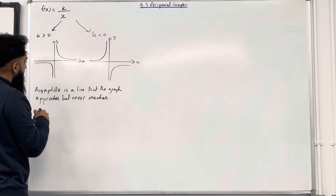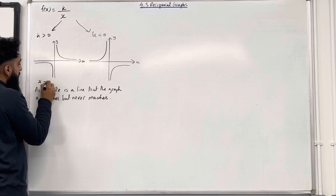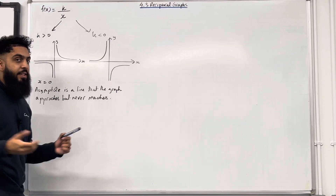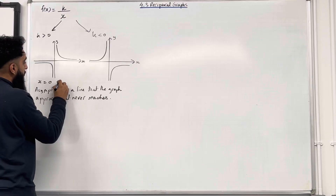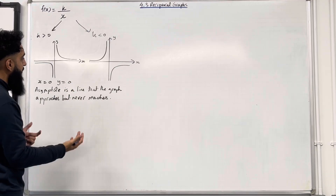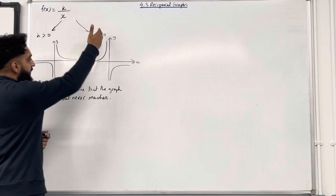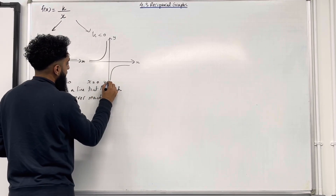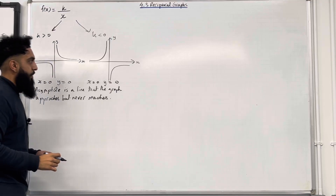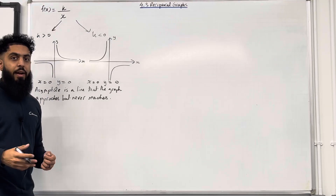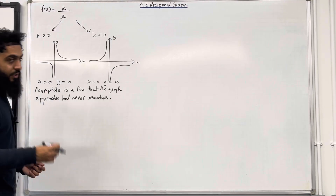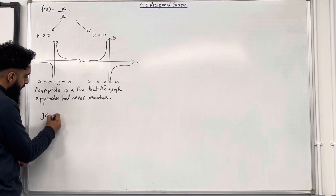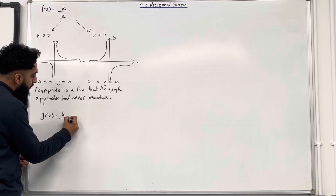Going back to this graph, the y and x axis are the asymptotes. The equation of the y axis is x equals 0 — that is my first asymptote. The equation of the x axis is y equals 0 — that is my second asymptote. The same applies to this particular graph: x equals 0 and y equals 0. Now we're going to look at a different function, which is also a reciprocal function: g of x is equal to k over x squared.